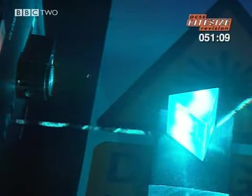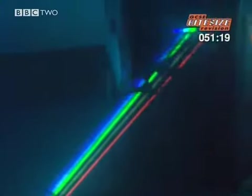With light waves, a prism slows down the different colours that make up white light by different amounts. The blue light is slowed down more than the red light and so it's bent through a greater angle.